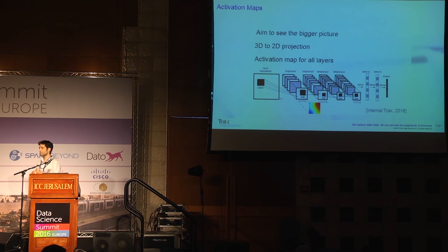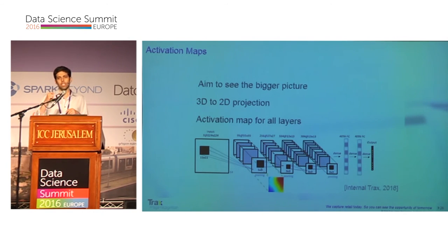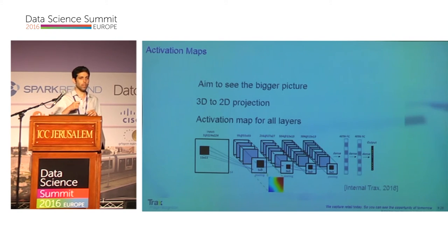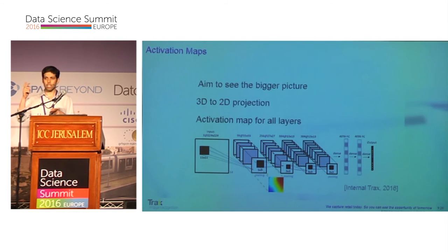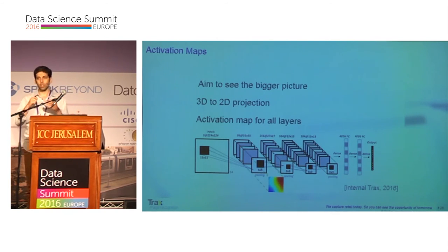This is why we came up with a method we called activation map. In this method, we build a heat map for each layer separately by performing an aggregation — average, maximum, or similar — along the kernel axis. For example, if I have 96 different kernels at layer one, each pixel in the heat map is the average value of that pixel convolved with all 96 kernels.